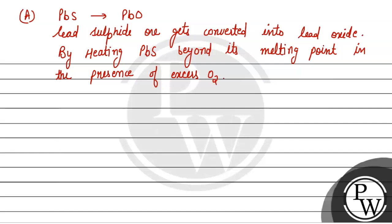By heating lead sulfide beyond its melting point in the presence of excess oxygen. So basically, lead sulfide के ore को इसके melting point से ज्यादा heat किया जाता है oxygen की supply में. तो हमारे पास जो sulfide का ore है, वो oxide में convert हो जाता है. इस process को हम बोलते हैं roasting. तो जो हमारा A part है, वो roasting से हो रहा है. तो A की correct match होगी P.